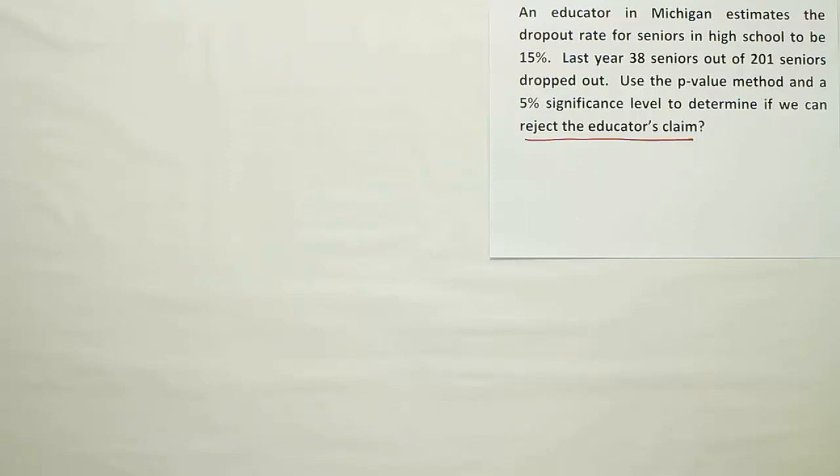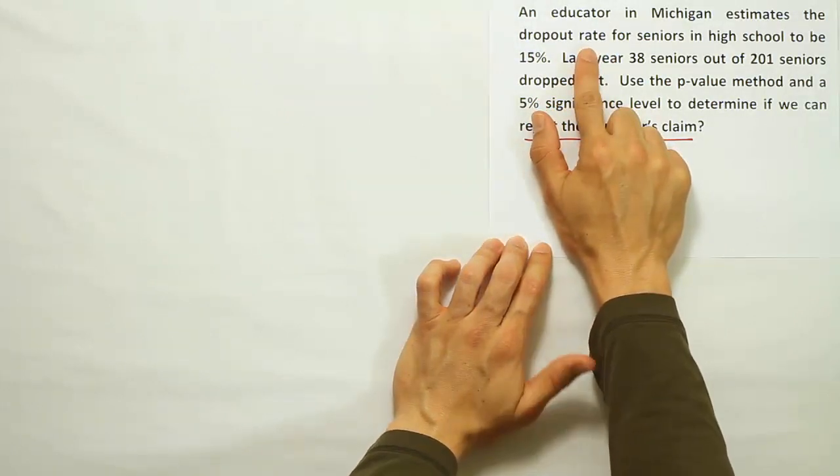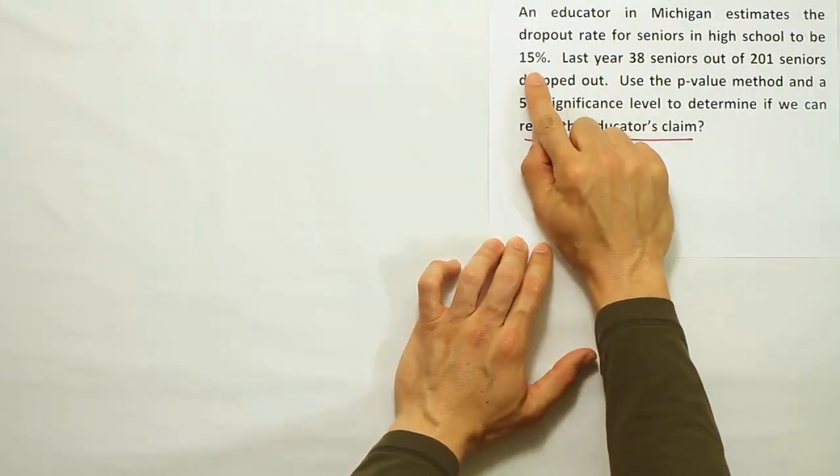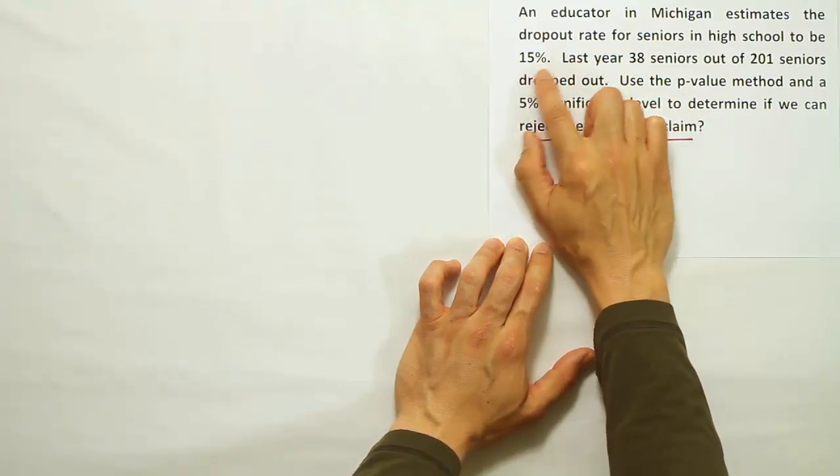From there, what we want to do is figure out if it's about the mean or about the proportion. Well, we have this phrase, the dropout rate. Rate is another way to say percentage or proportion. We also are talking about 15% of the seniors dropping out of school. So again, that's a rate or proportion.